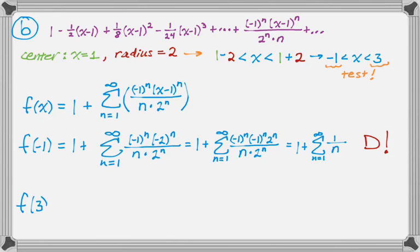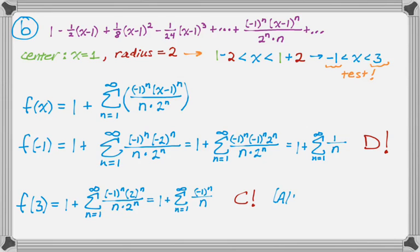I'm going to do the same thing here with 3. So I'm plugging in 3. And something similar happens, but it's kind of the exact opposite. The 2^n's cancel, and I'm left with 1 + the sum from 1 to infinity, (-1)^n/n. That definitely converges, and if you need a reason, that's the alternating harmonic series. It's also a convergent alternating series if you want to go through that, but that's a famous series, so you're allowed to know it. So overall, my interval of convergence is (-1, 3].